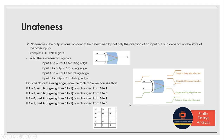Next is non-unateness. Non-unateness means the output transition cannot be determined only by the direction of the input, but also depends on the state of the other input. Examples are XOR and XNOR gates, which also need a minimum of two inputs, giving us four timing arcs.